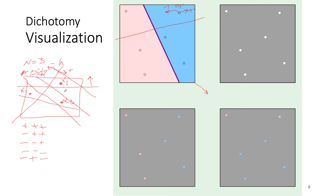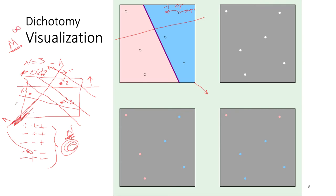Now we know that no matter what the number of hypotheses M is, we have a more sensible upper bound that relates to the number of points. We use N to find that value instead of M — the number of hypotheses. Even though you'll have an infinite number of possible hypotheses in continuous space, the effective count is captured by the number of distinct dichotomies. Let's now see how to find the upper bound using N as the number of data points.